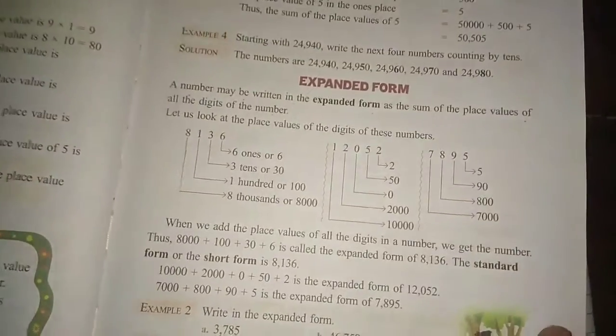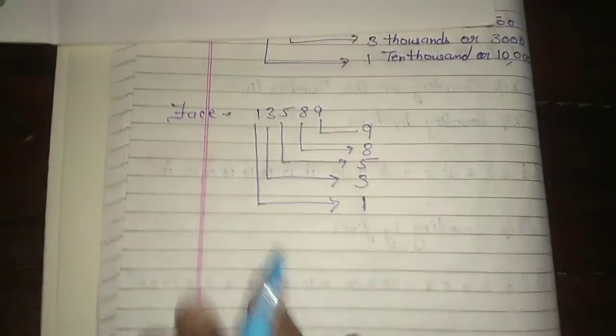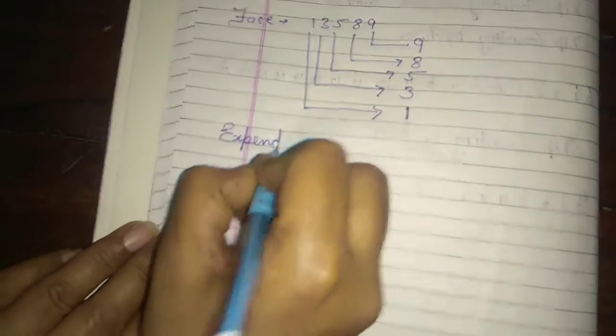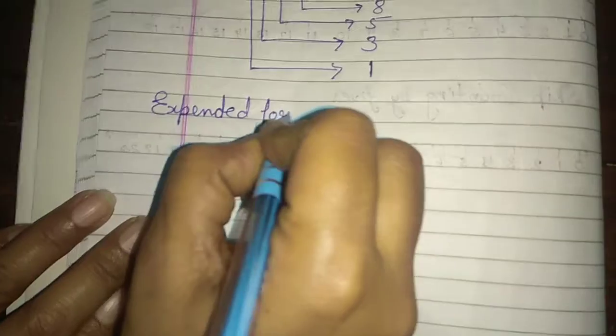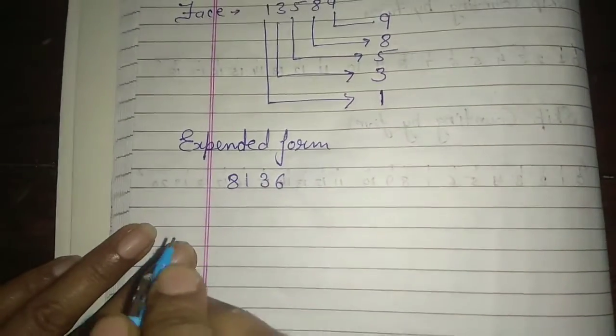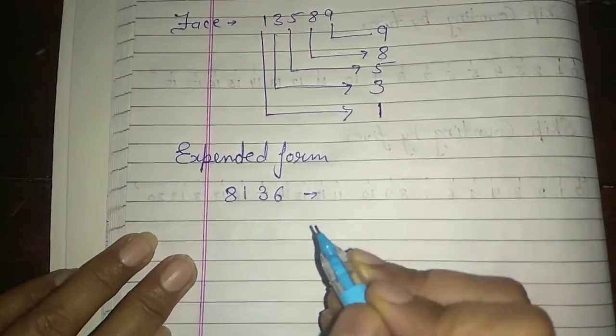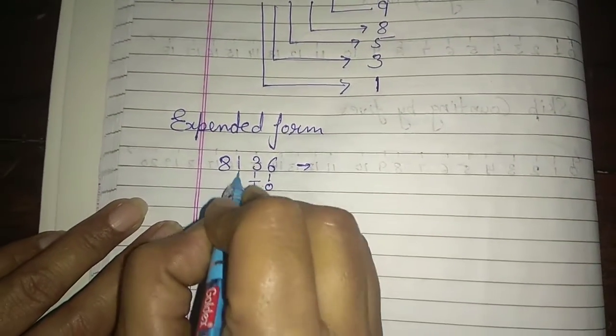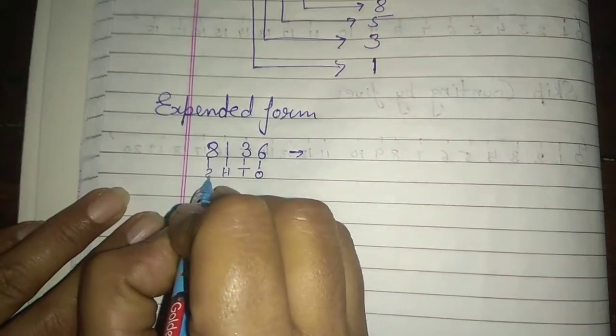See the first example. Expanded form. Eight, one, three, six. Okay, how can we convert this into the expanded form? Six is in your ones place, three is in the tens, one is in the hundreds, and eight is in the thousands.